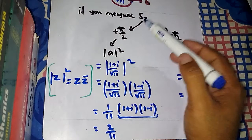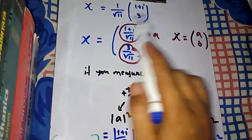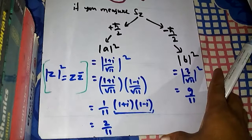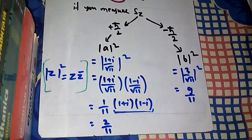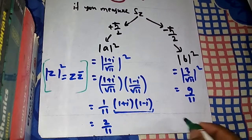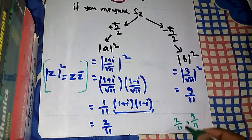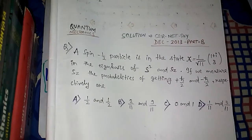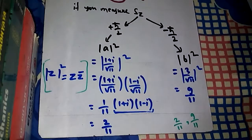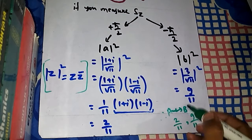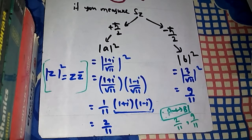So the results are: the probability of finding plus h-bar/2 is 2/11, and the probability of finding minus h-bar/2 is 9/11. We can see that option B, 2/11 and 9/11, is the answer. Thank you.